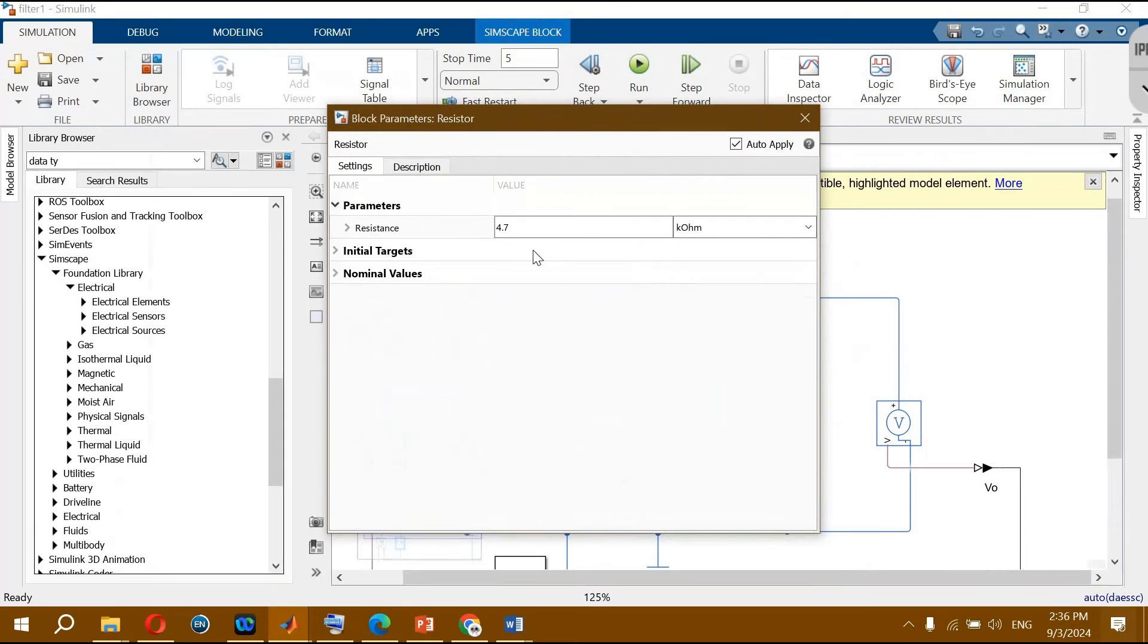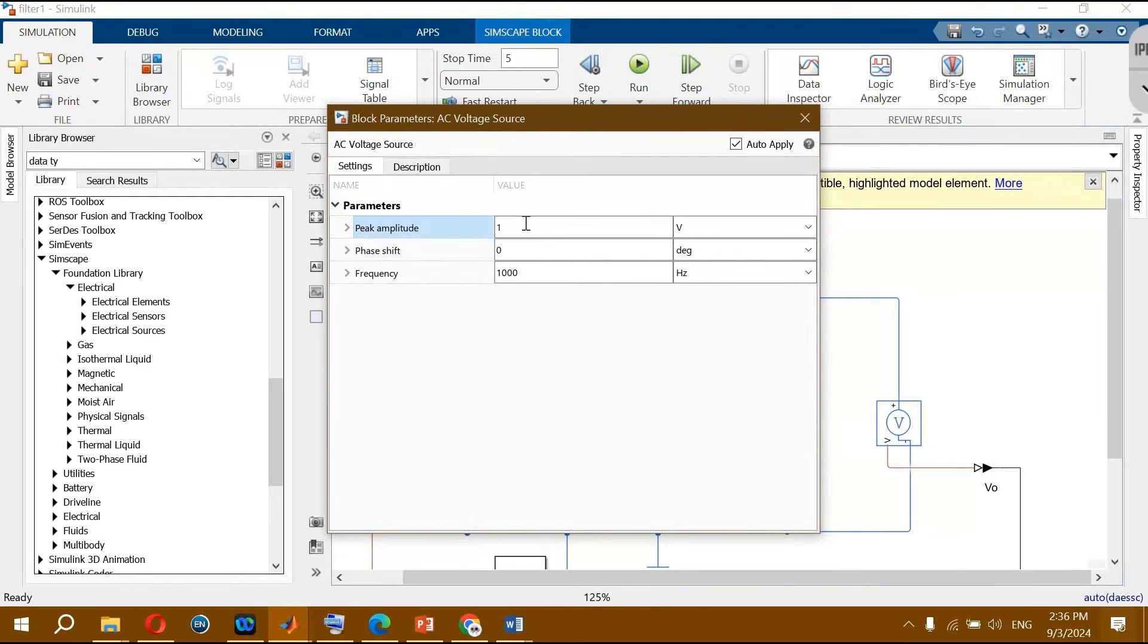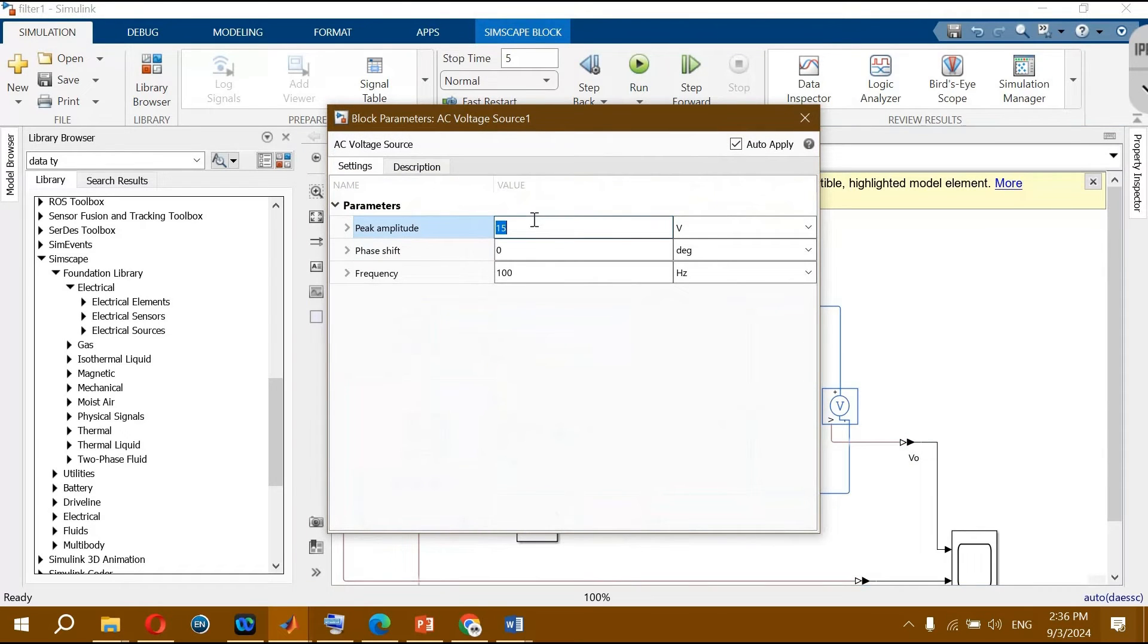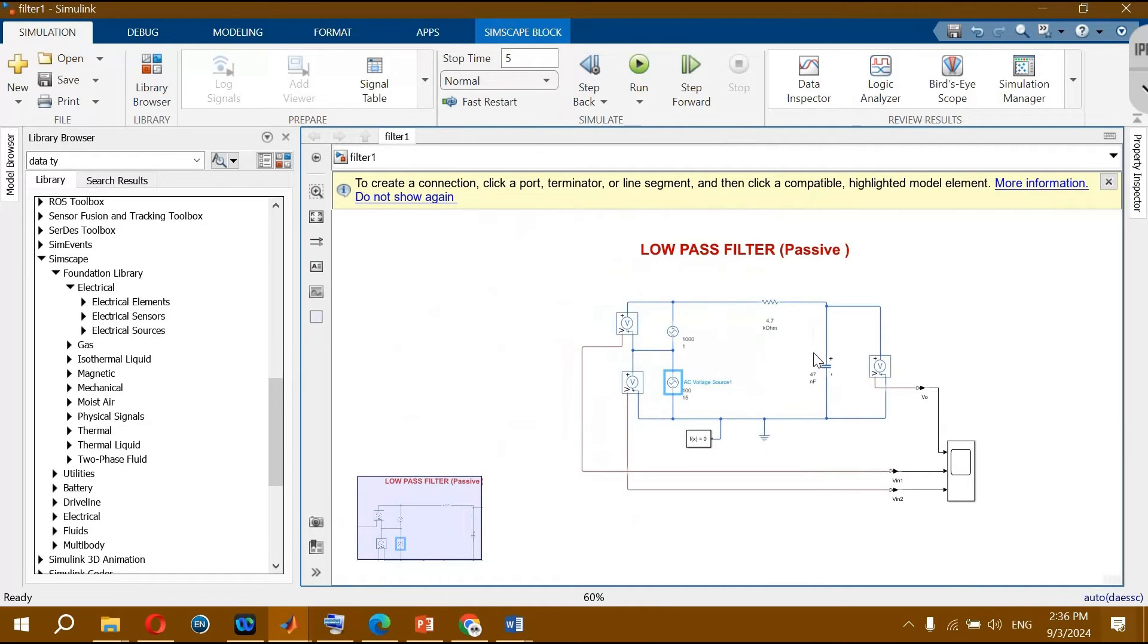Here is the resistor and here is capacitor. We set the amplitude one and frequency one thousand. Here we set the amplitude 15 and the frequency 100.